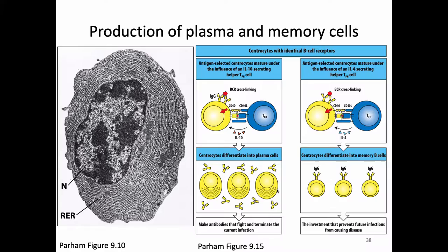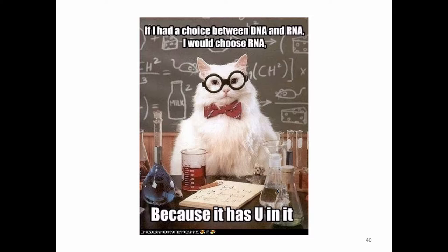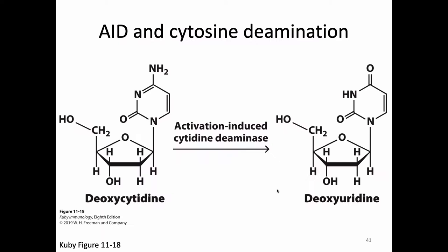Before that, I need to give a slight reminder about some basics of molecular biology, which Chemistry Cat is going to help with. Chemistry Cat reminds us about the difference between RNA and DNA — specifically that RNA has uracil in it and DNA does not. That's going to be a key thing to remember as we talk about this process. Immunologists have realized that a critical enzyme in B cells acting in the periphery is an enzyme called AID, which stands for activation-induced cytidine deaminase.